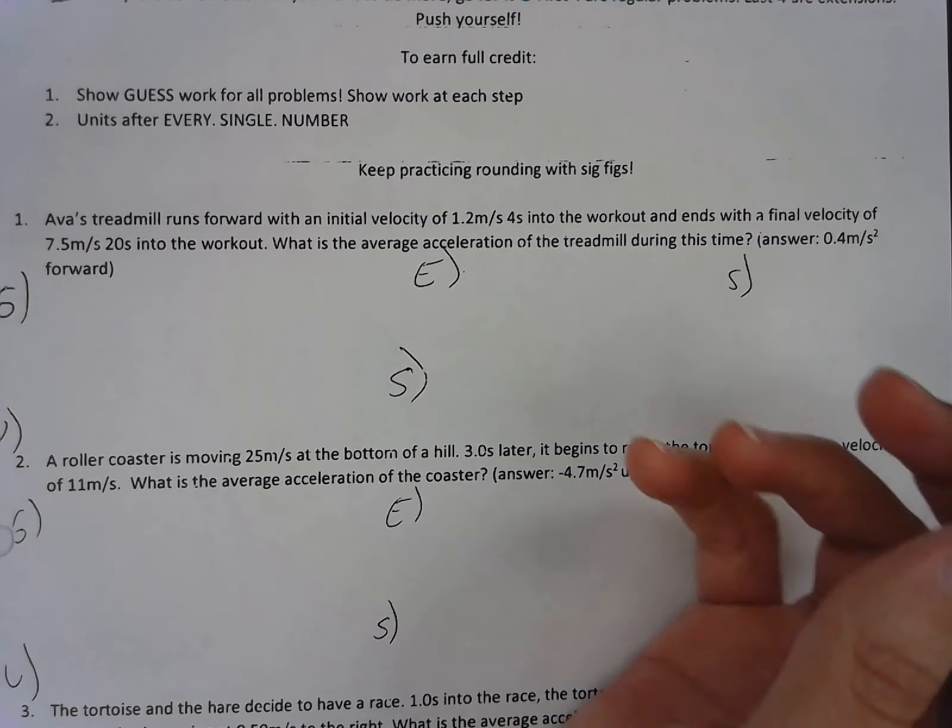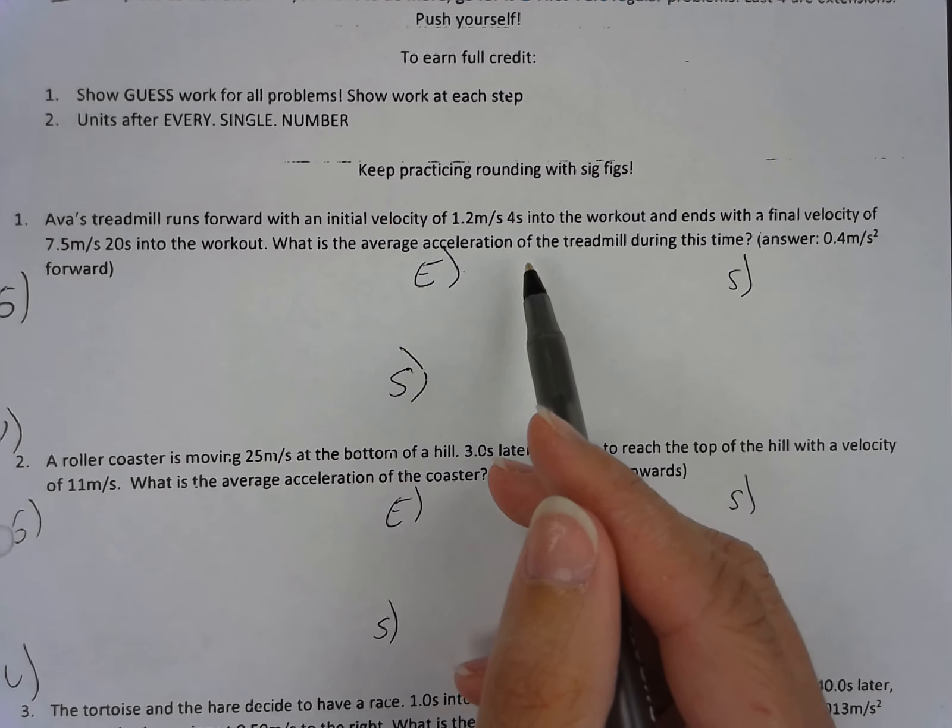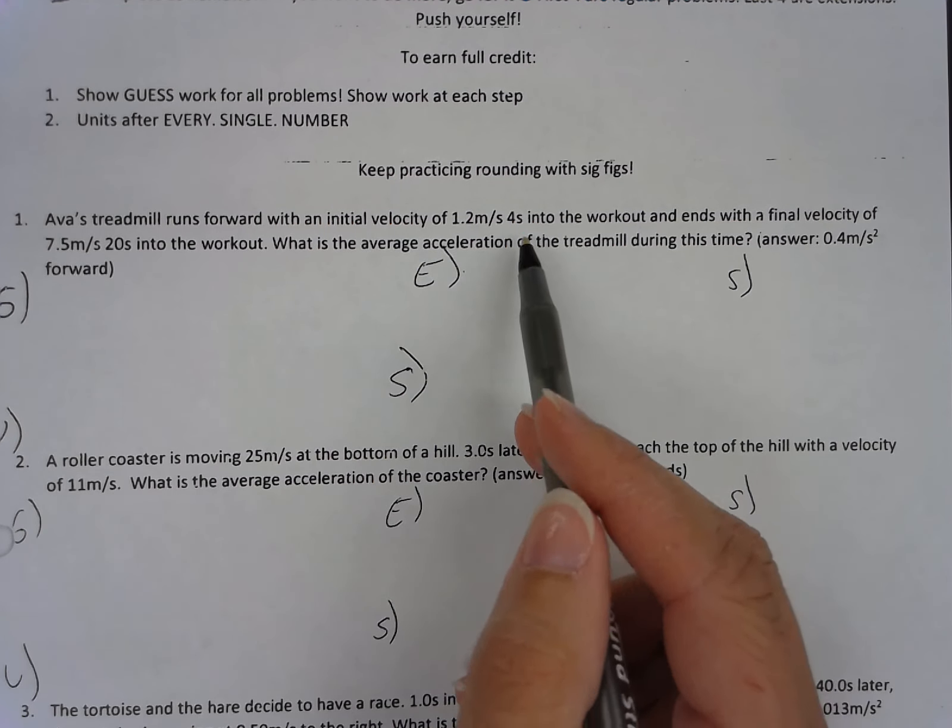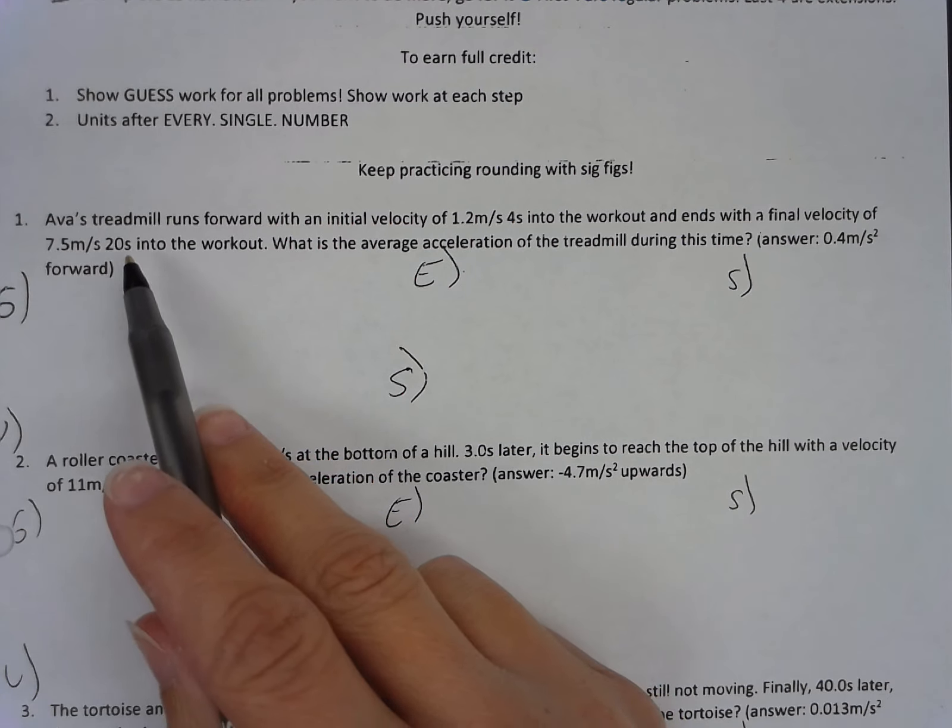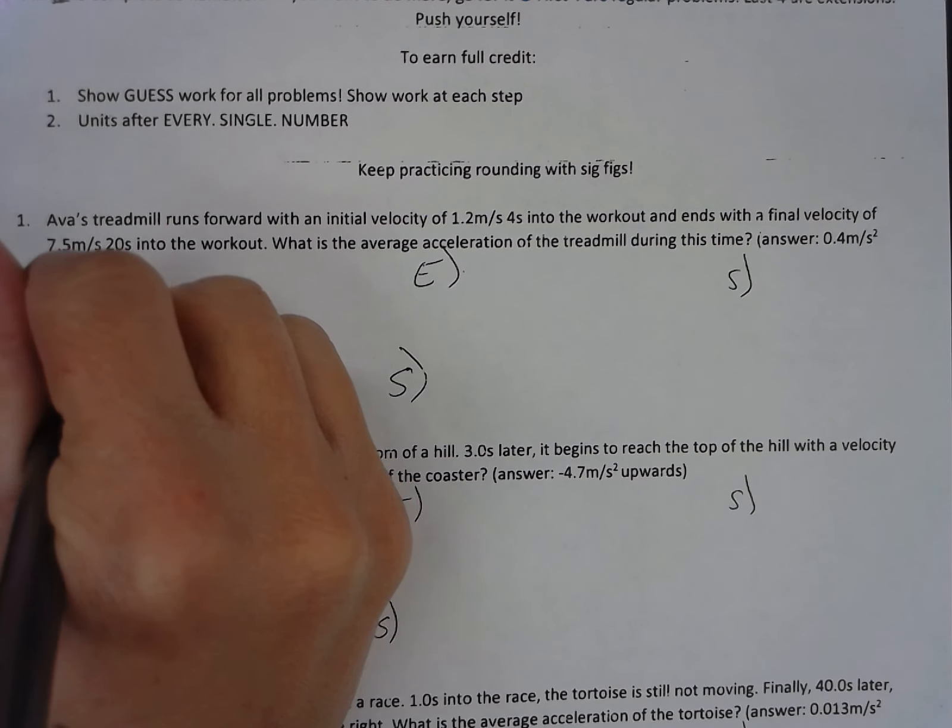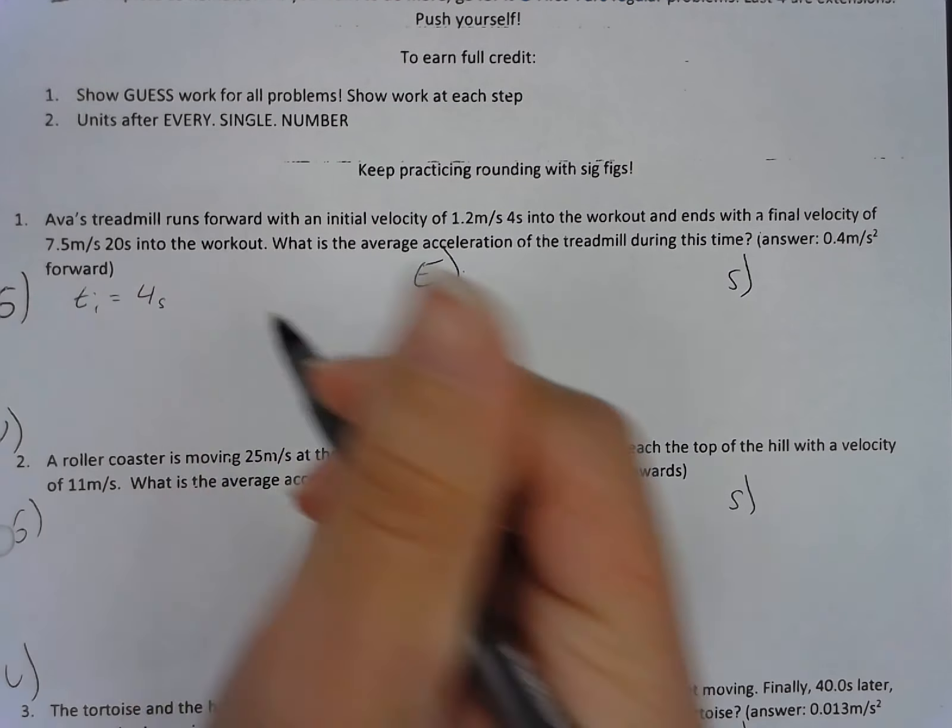So I'm first going to designate what is the initial and final times within my time frame. So if I hit start on a stopwatch, whatever time would come first is the initial, whatever would come last is the final. So I have 4 seconds and 20 seconds. Remember, seconds is the unit for time. 4 seconds would come first. So this is my Ti initial time within my problem.